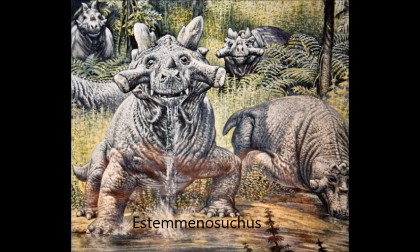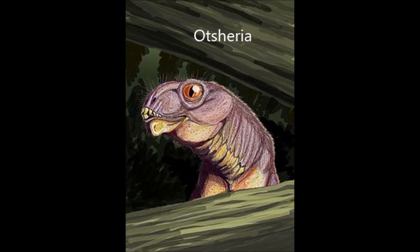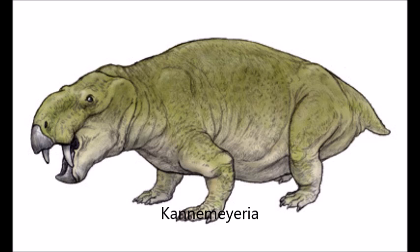The next branch is a clade of large therapsids called Dinocephalia, meaning 'terrible head,' and were herbivorous, carnivorous, and omnivorous. They only lived during the Middle Permian, so they were not particularly successful. The next therapsids were the Anomodontids, who lived from the Middle Permian to the Late Triassic and were toothless herbivores. Of the Anomodonts, the only survivors of the Permian-Triassic extinction were the Dicynodonts, so called because of their two prominent canines.